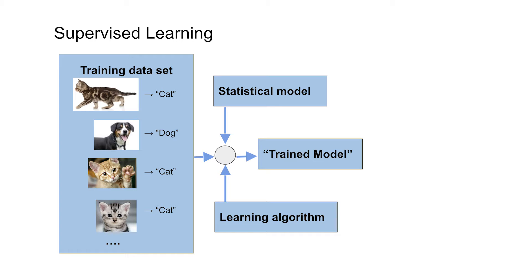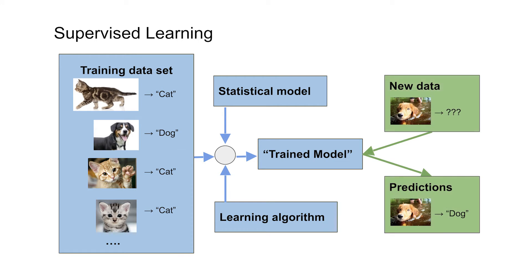This trained model has learned something about the association between images and the label dog or cat. Once trained, we can give it an image it has never seen before, and it will make a prediction: is this a dog or a cat? If we've done a good job, it should be correct in its prediction.